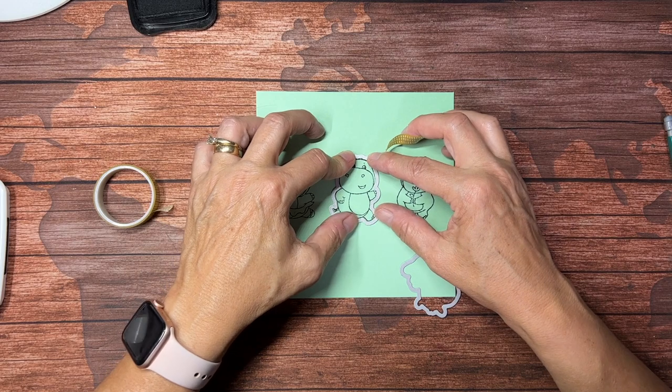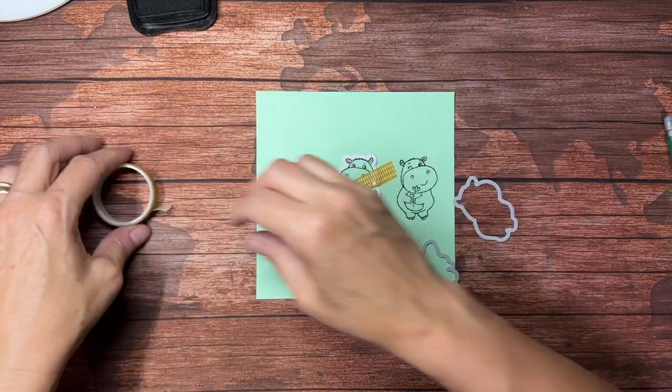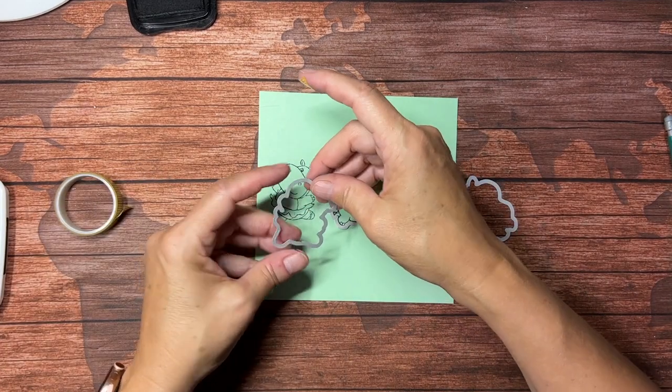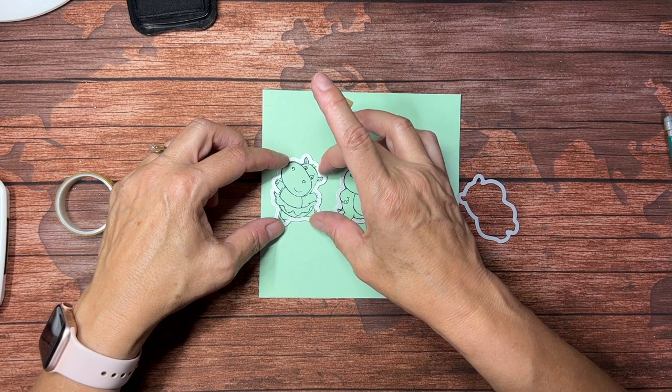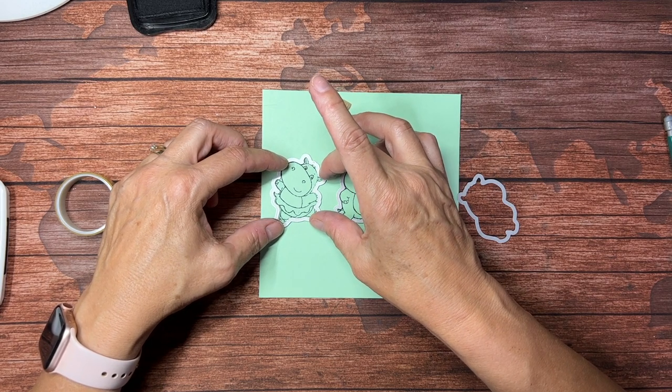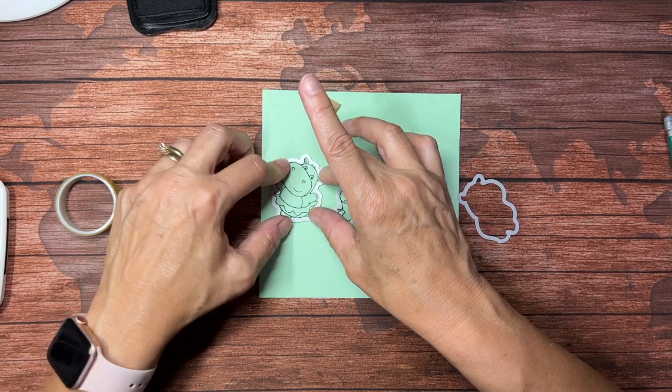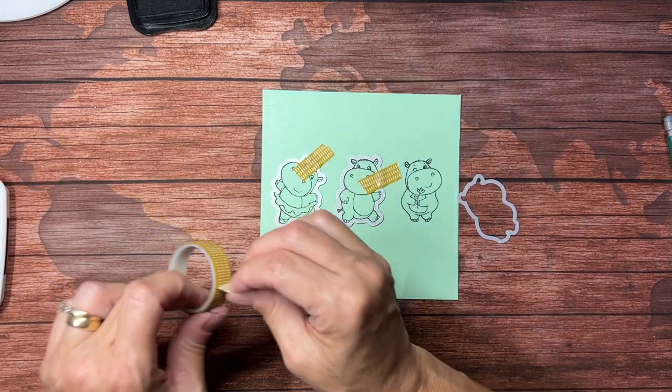So it takes just a little bit of time. And if I were to do this on every single hippo that I was going to be die cutting—say I wanted to make ten cards, that's thirty of these hippos total—this would take me quite a while to do.